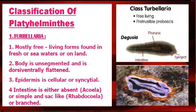Now we will discuss each class one by one. The first class is Turbellaria. Most are free-living forms found in fresh or sea waters or on land. The body is unsegmented and dorsoventrally flattened. The epidermis is cellular or cylindrical. The intestine is either absent or simple and sac-like. Examples of class Turbellaria can be seen here.